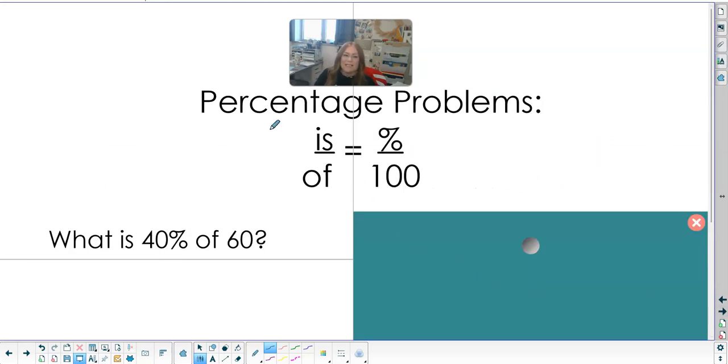The next section on our test is setting up percentage problems. Every time, this is the part out of the total. This is the part out of the total. Here's our percent out of 100. Every single time, we're using this exact same formula to set up our problem. So we're going to read what is 40% of 60. So let's come and circle our percentage. So we have 40%, 40, and it's out of 100 every time. Of 60.